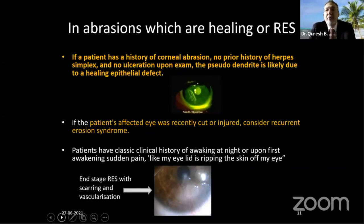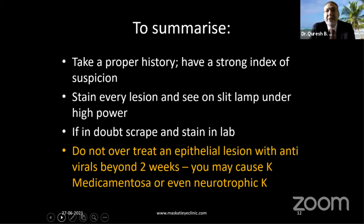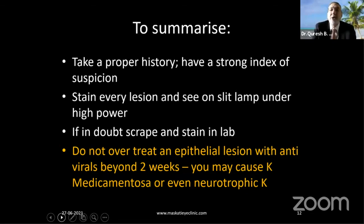For abrasions and recurrent epithelial erosions, the patient gives a clear history of injury, minor trauma, or waking at night with sudden pain — so the history is a dead giveaway. To summarize: take a proper history, maintain a strong index of suspicion, stain every lesion — fluorescein is cheap and available. Examine on the slit lamp under high power and look for the classical signs. If in doubt, scrape and stain with Pap smear or Giemsa. Do not overtreat an epithelial lesion with antivirals beyond two weeks — think in terms of keratitis medicamentosa or neurotrophic keratitis, stop everything, put the patient on lubricants, and later you can add soft steroids.